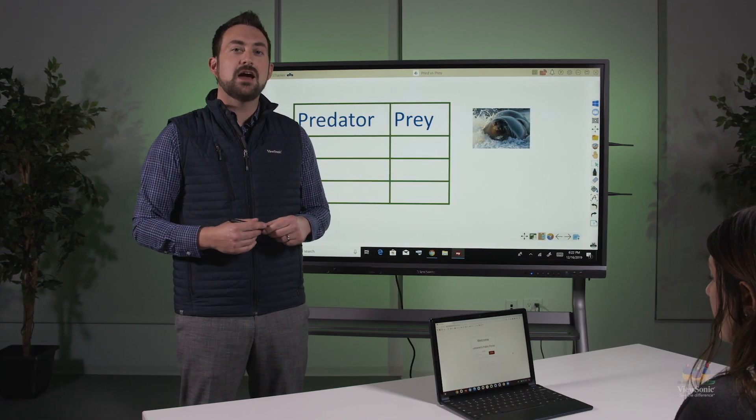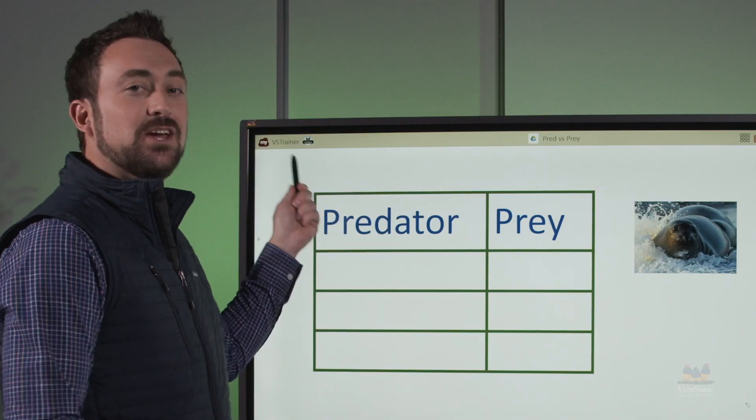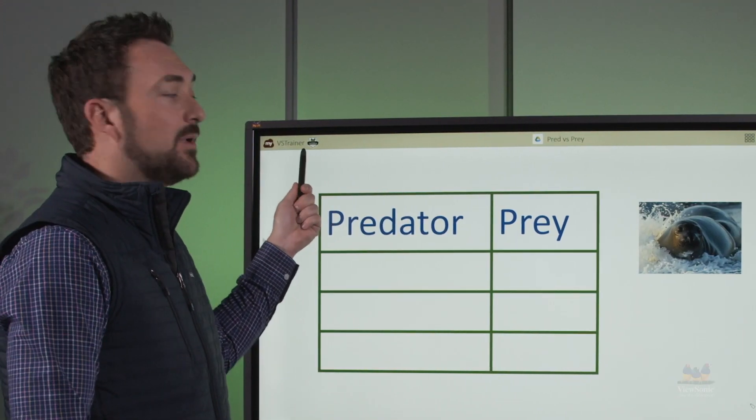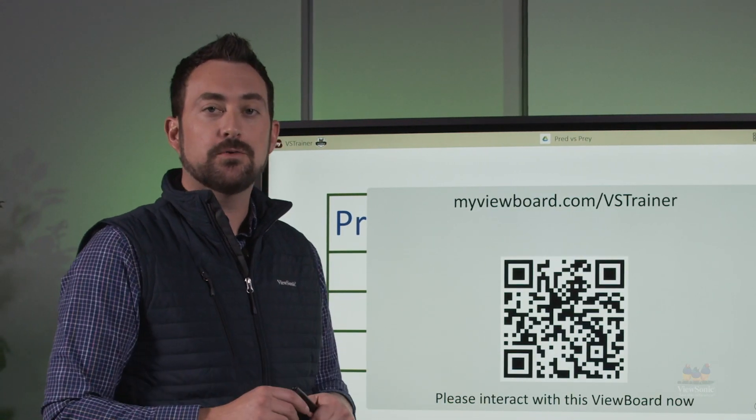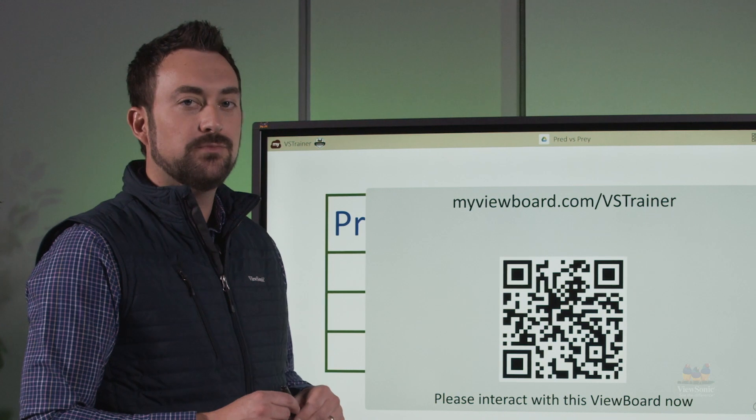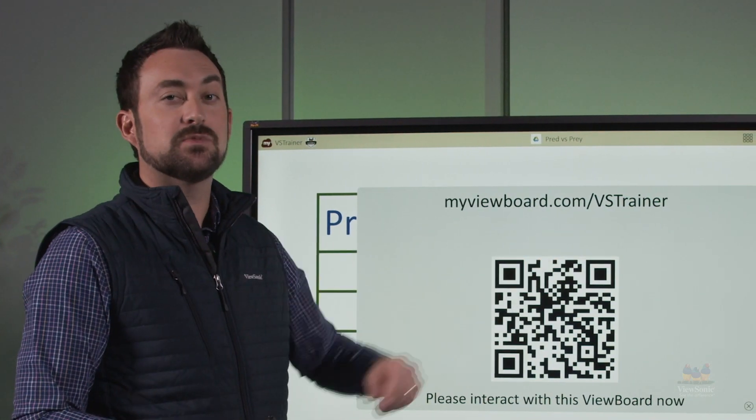Let's jump right in and see how we can get students to interact with MyViewBoard. Locate your board name in the top left corner of MyViewBoard. Touch it to display the URL for your portal as well as a QR code. You can scan the QR code and it takes you to the same address that is displayed here.